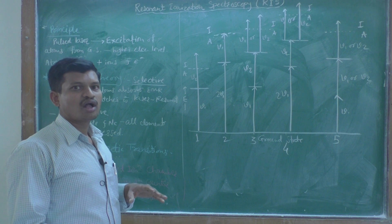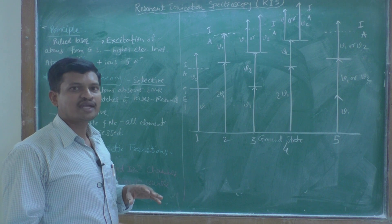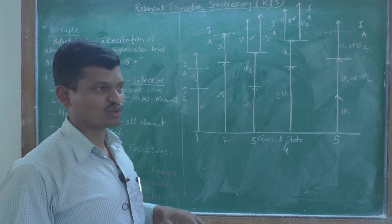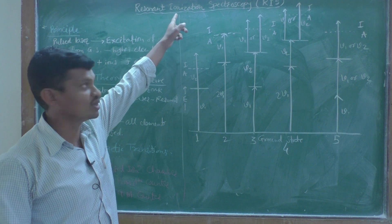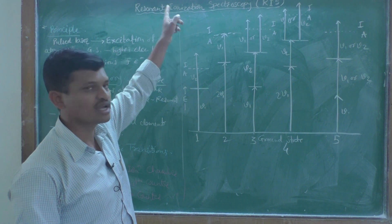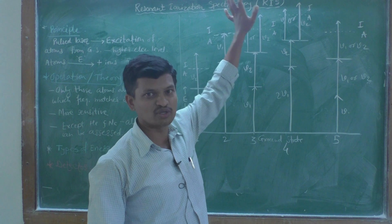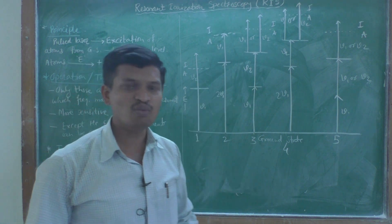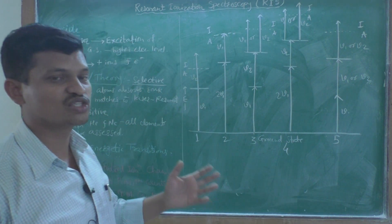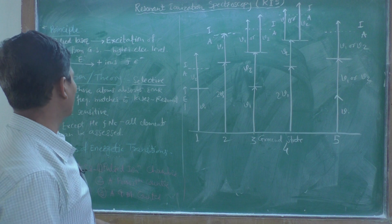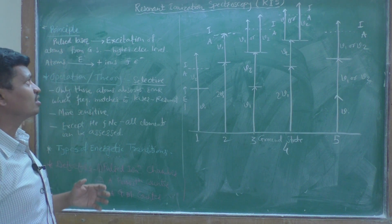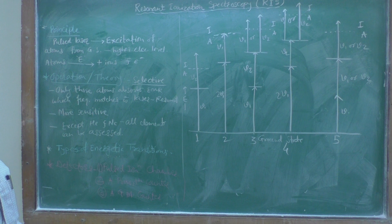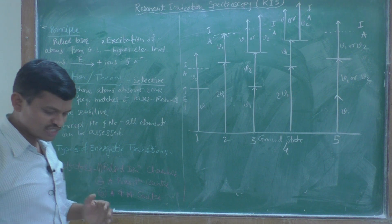The atoms are converted to ions and electrons. This process is known as ionization, and hence the name ionization spectroscopy. This is the basic principle of resonant ionization spectroscopy.